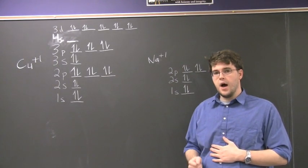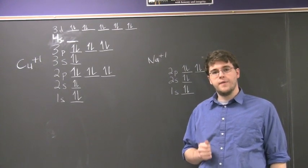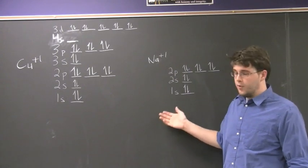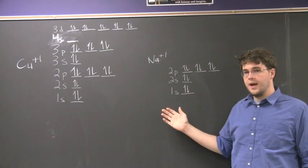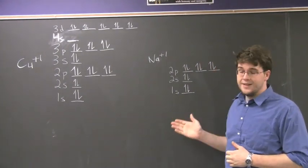And if you have a non-noble gas configuration, then it will lead more towards covalency than ionic bonding. In this example, we have a copper one-plus ion and a sodium one-plus ion, which are relatively similar in both charge and size.